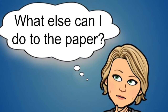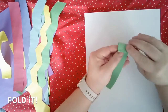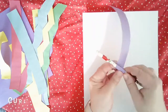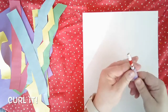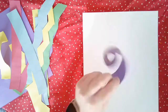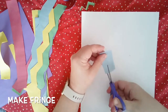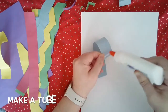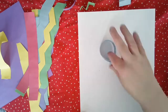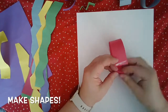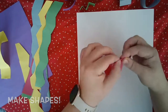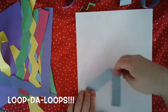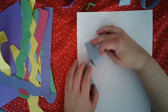What are some other things you can do to your paper? You can fold it back and forth to make zigzag strips. You can wrap it around a pencil to make it curl. You can cut little tiny pieces to make a fringe, like a feather. You can loop it around to make a circle or a tube. You can make different shapes by first making a tube and then folding the corners to make a triangle, square, or rectangle. If you glue down one side, you can twist it to make a loop-de-loop.